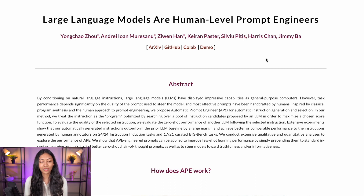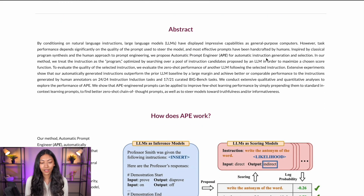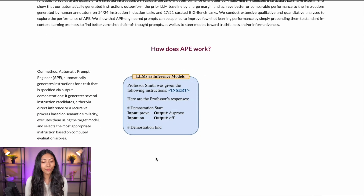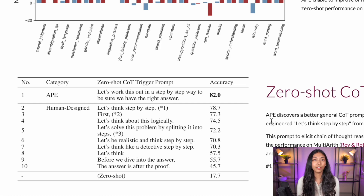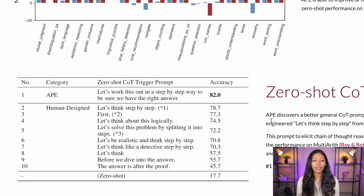One of the latest research examples is called 'Large Language Models Are Human-Level Prompt Engineers,' where they created a language model called APE — Automatic Prompt Engineer — which is automatically able to generate several prompts. The prompts that APE has created turn out to be actually more accurate than even human-designed prompts. In the future, we can definitely see a lot more research being done on prompt engineering, and a lot of the large language models coming out may actually be optimized to create better prompts as well.